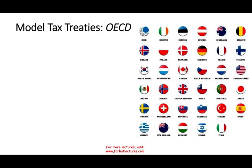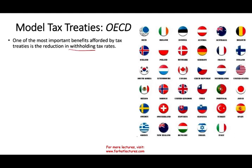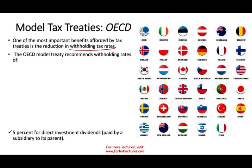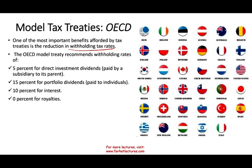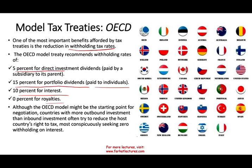One of the most important aspects of the OECD model is the reduction in withholding rates. For example, the model sets 5% for direct investment dividends paid by subsidiaries to the parent, 15% for portfolio dividends paid to individuals, 10% on interest, and 0% on royalties. Generally speaking, countries with more outbound investment than inbound will always try to reduce the host country's right to tax — seeking zero withholding on interest so they can repatriate 100% of their investment returns.